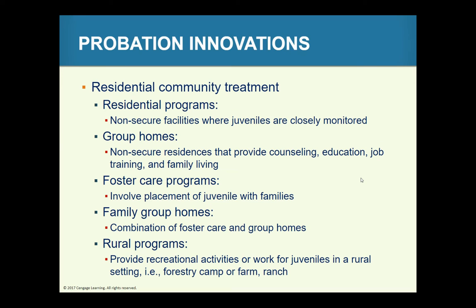Residential community treatment is where youth are placed under probation supervision and the probation department maintains a residential treatment facility. These can be divided into four categories: residential programs where juveniles are closely monitored and develop close relationships with staff; group homes, which are non-secured structured residences providing counseling, education, job training, and family living; foster care programs offering placements with families who provide attention, guidance, and care; and family group homes, a combination of foster care and group homes run by a single family rather than professional staff.